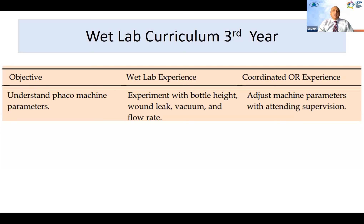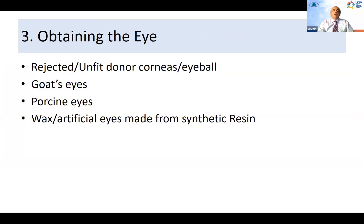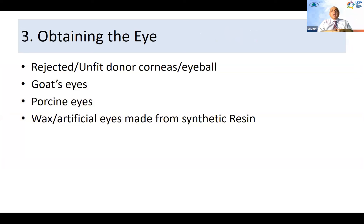In the third year, you focus on understanding FACO parameters — experimenting with bottle height, wound leak, vacuum, and flow rate — and then adjusting those during surgery yourself. You can use advanced procedures like CTR placement. Usually the curriculum runs up through the third year, and by the fourth year the resident is likely proficient at the whole surgery. At the end, I'll discuss rubrics, which are very important to assess these residents, grade them, and give feedback on how they're doing.